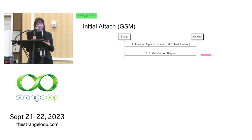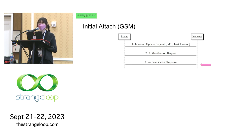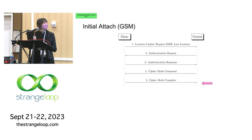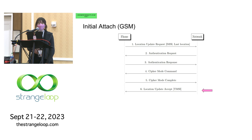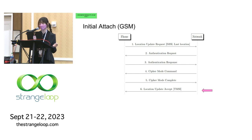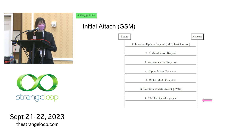The network responds with an authentication request — can you prove you are who you say you are? The phone does some cryptography calculations and sends over an authentication response. The network says: cool, you're authenticated — here's information about the cryptography algorithm we'll be using for encrypting communications between us. The phone acknowledges it will use the cryptography the network specifies. Then the network says: everything's great, I've accepted your initial location update request — here's your temporary identifier, the TMSI, so that when you contact me in the future you don't always have to use your private sensitive IMSI. The phone then acknowledges receipt of its temporary identifier.